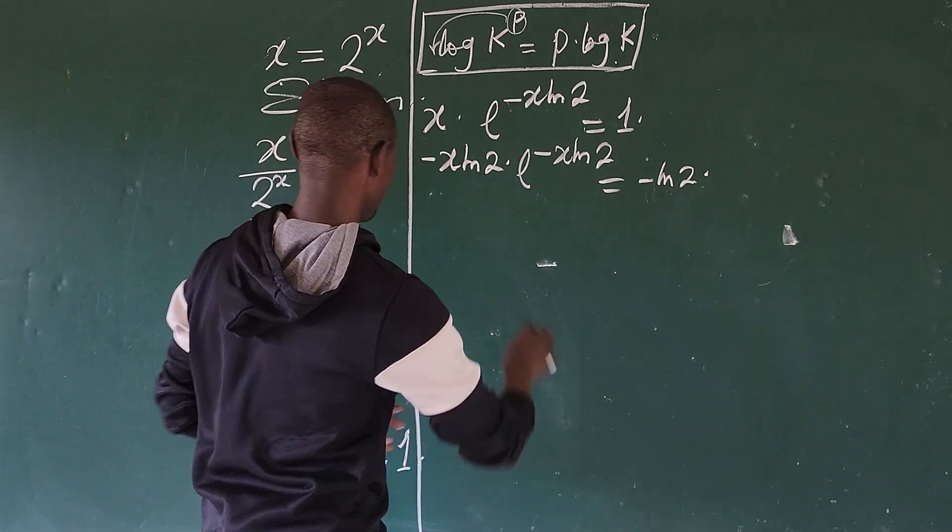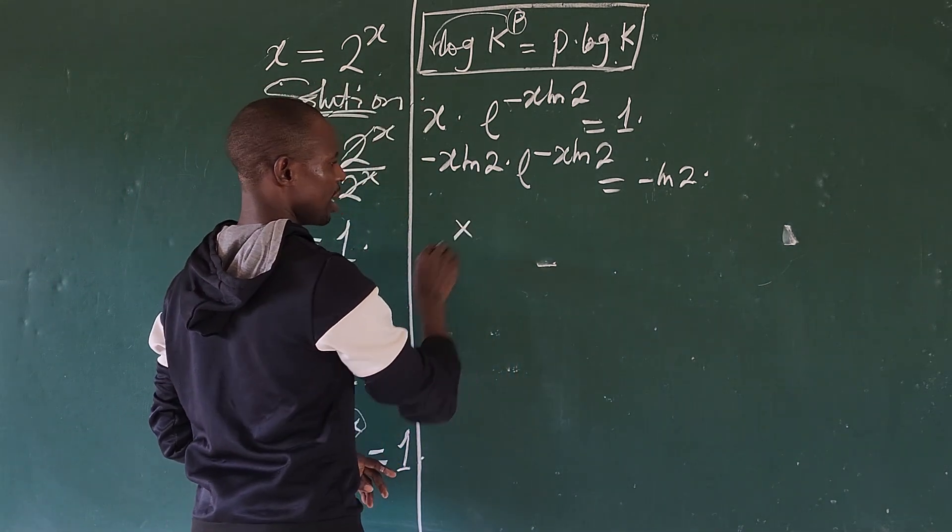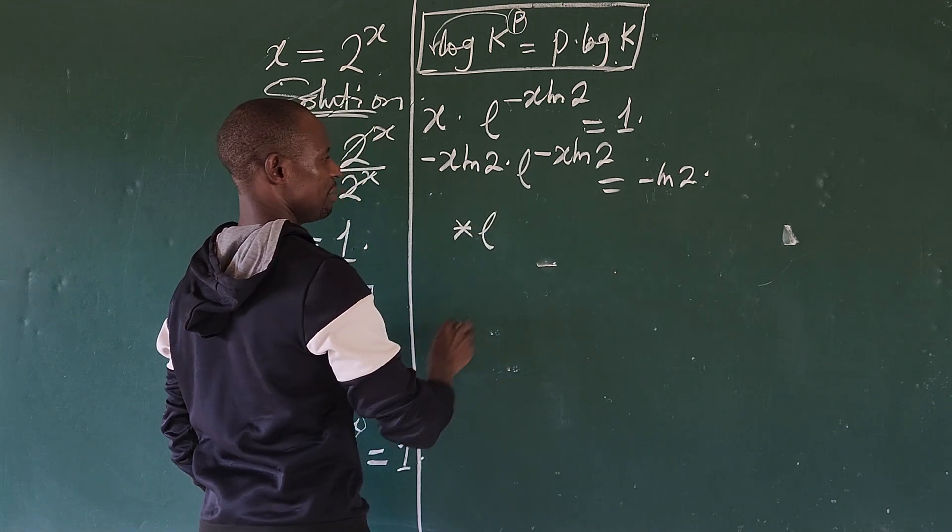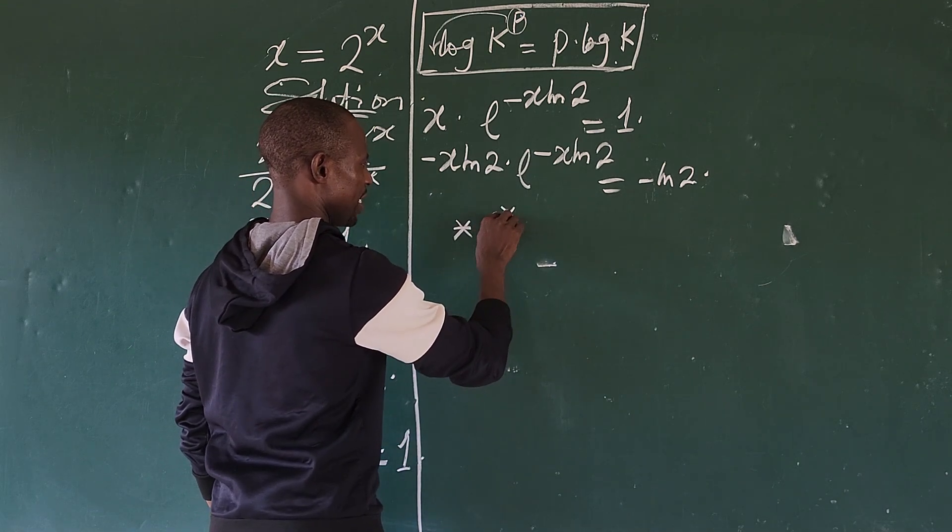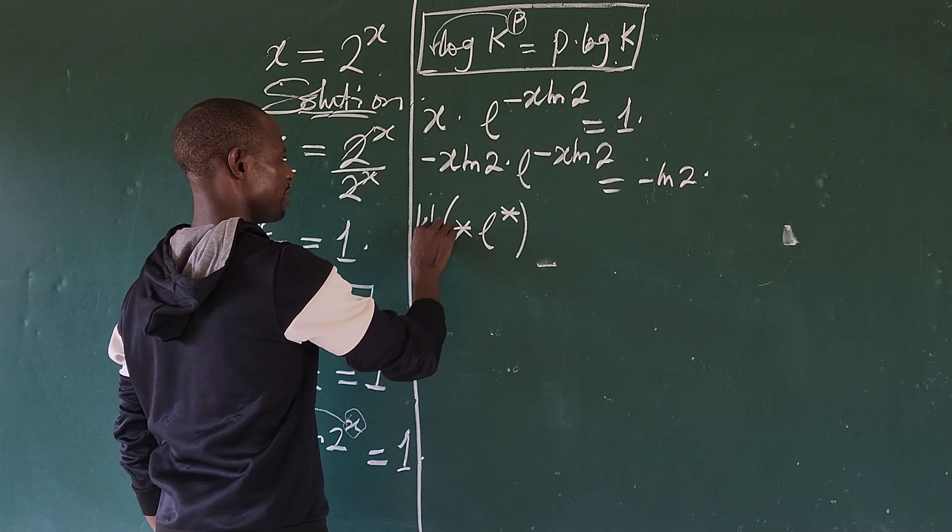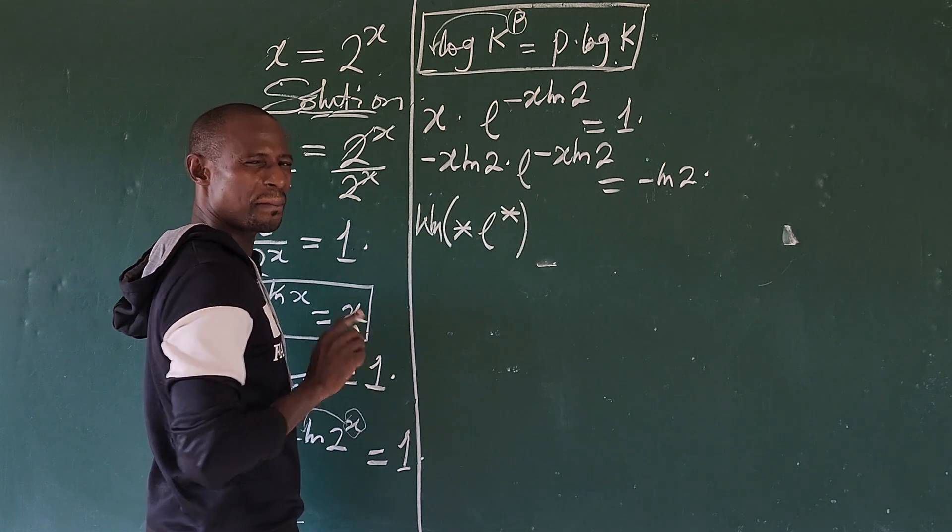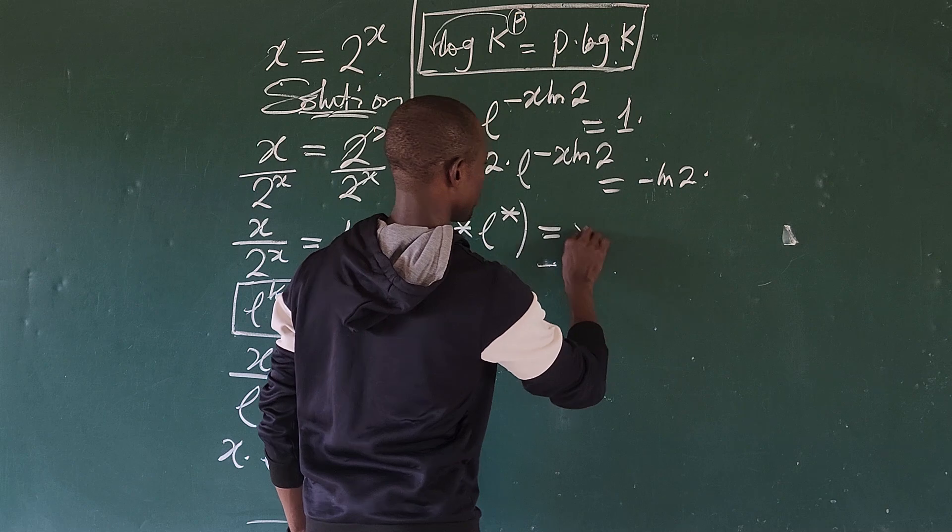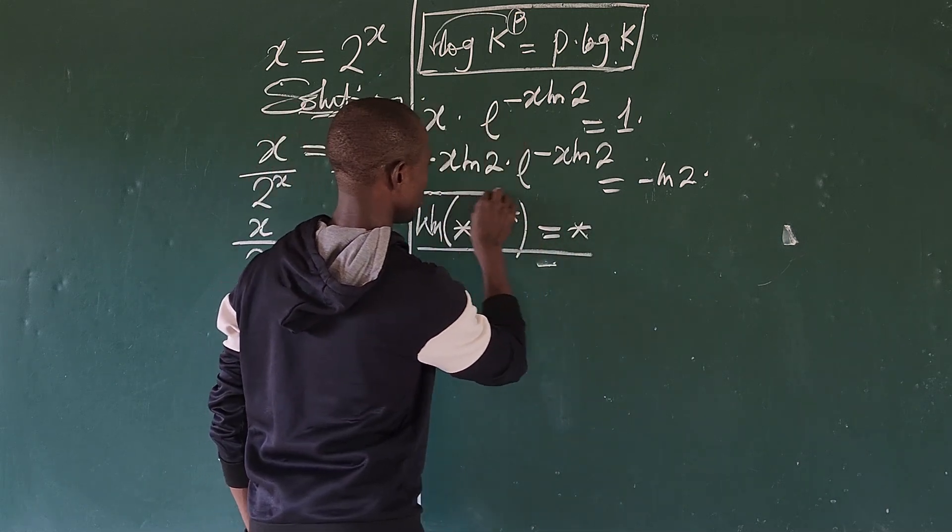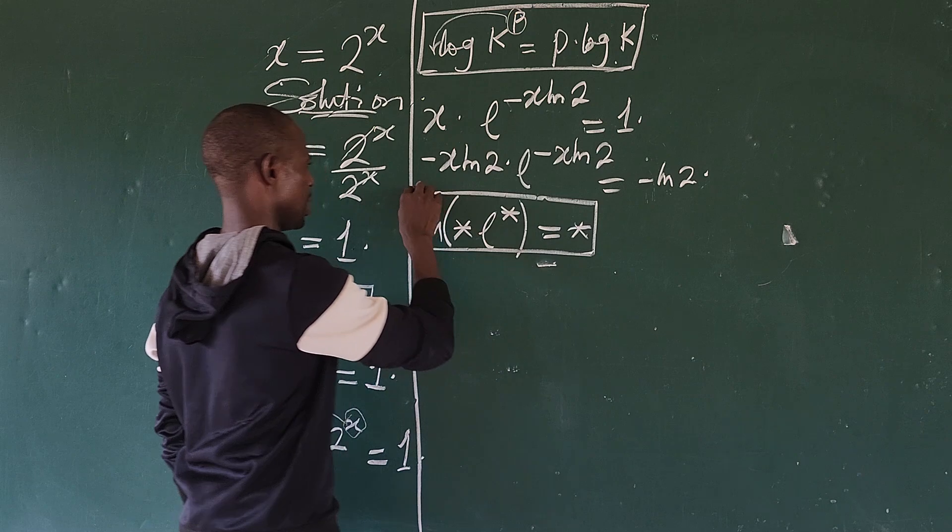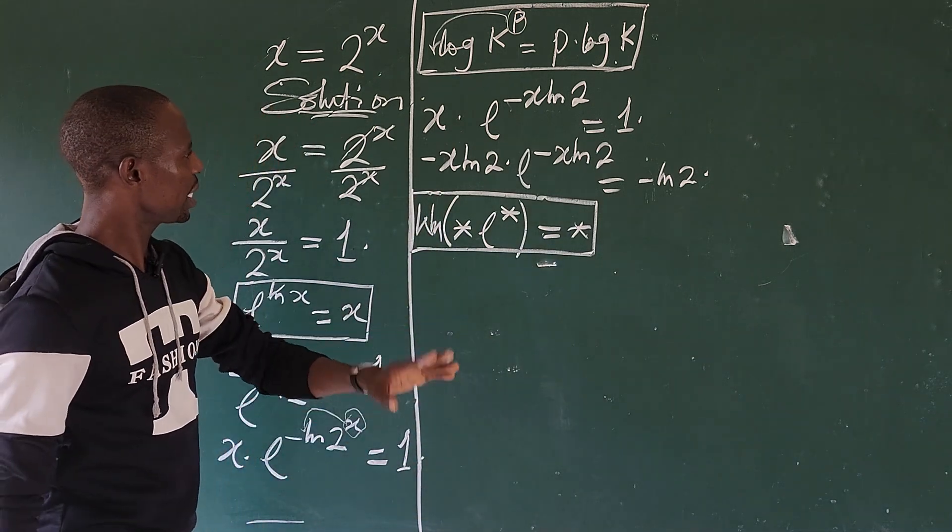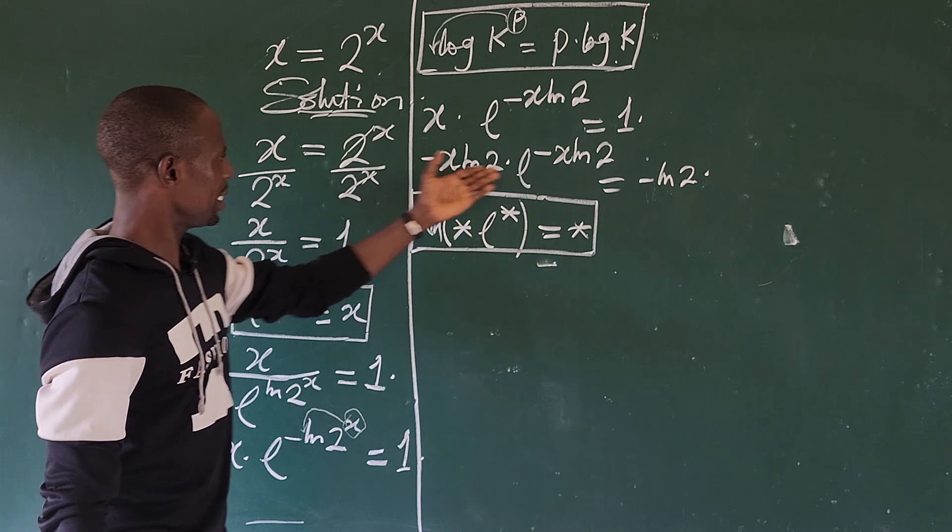The Lambert W function says that if you have a star times e to the power of a star, and we take the Lambert W function, which is also known as the product log, this will give us a star. This is what we call the product log or the Lambert W function.